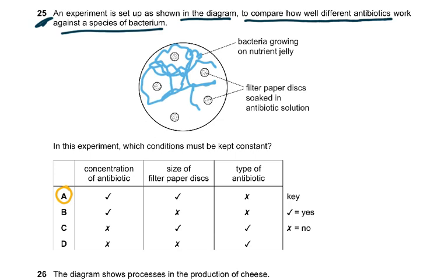We must keep the concentration the same even though different antibiotics are being tested. The size of the filter paper disc must also be the same. Each antibiotic is studied on one Petri dish — one antibiotic, then another on a separate dish, and so on.